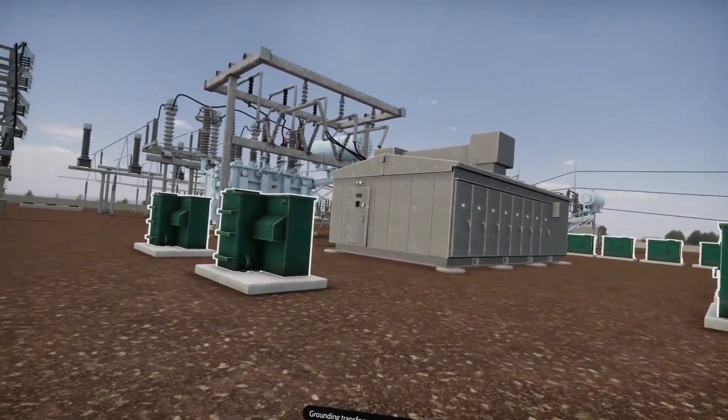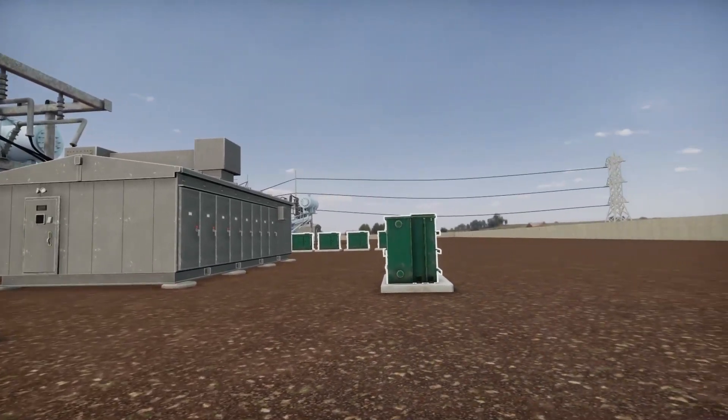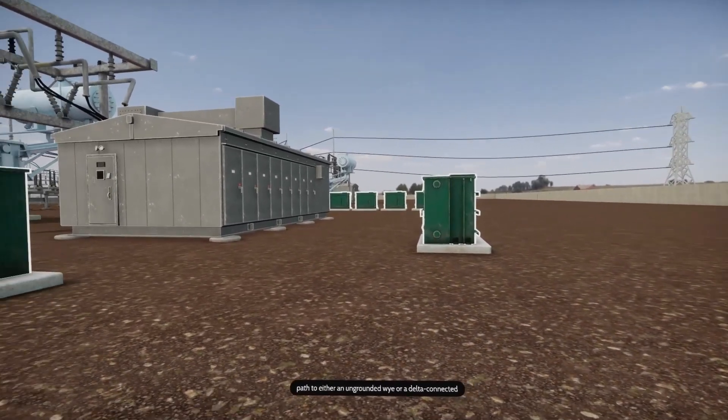Grounding transformers are used to provide a ground path to either an ungrounded Y or a delta-connected system.